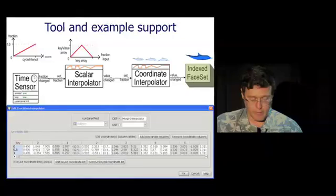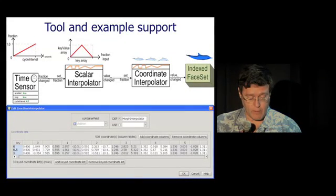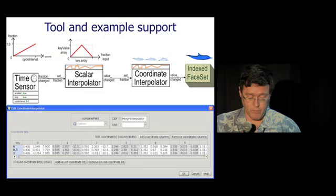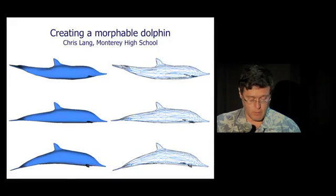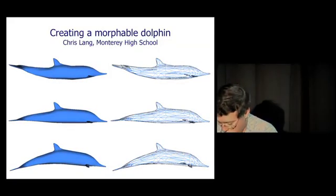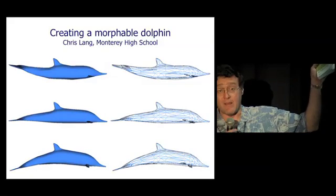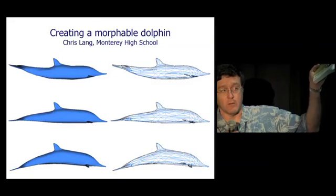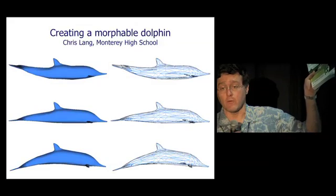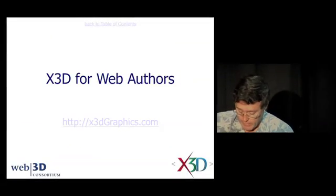I included a snapshot of a high school student's example and how he put together a live morphing dolphin. The list goes on and on. If you want to get the book, Len's giving one away at the end of the session. This answers the question: what is X3D? You can also get it online.